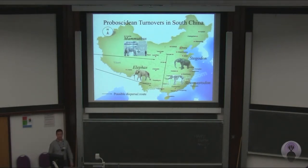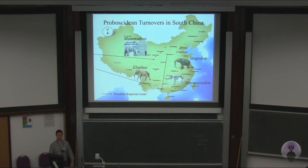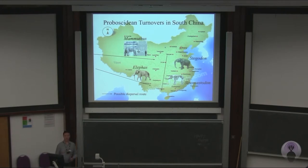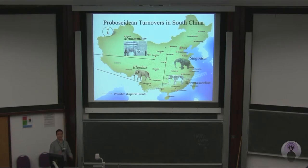If we consolidate this information with fossil records from other parts of China, we now know that Sinomastodon and Stegadon first originated in North China during the Miocene and subsequently shifted their distribution to South China during the Pleistocene. Interestingly, this shift took place at roughly the same time when members of the more derived Elephantidae family migrated into China from Africa. In North China at about this time, we have the earliest record of the mammoth in Eurasia, and subsequently Elephas appears in the Levant, the Siwaliks in India, and also in South China.